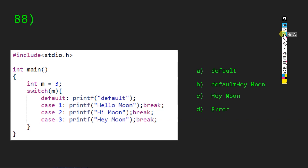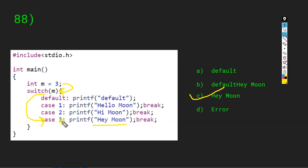We have a switch case code with int m equals 3. Always remember switch is not a loop — it is a conditional block. We pass m=3 into the switch; it checks for case 3, finds it, prints 'hey moon', then breaks. The answer is C: 'hey moon'. If case 3 were absent, the default would have been printed.